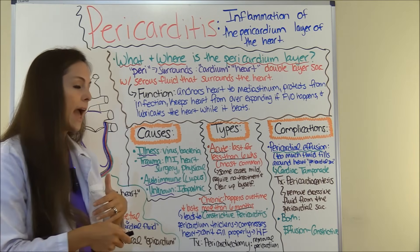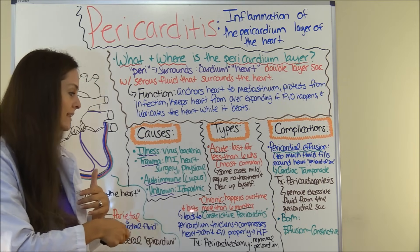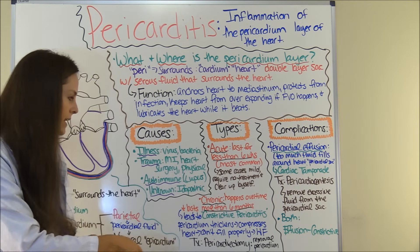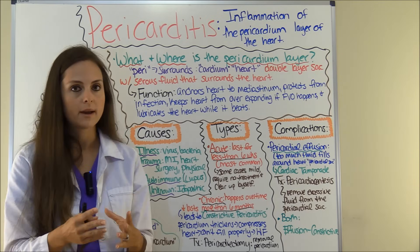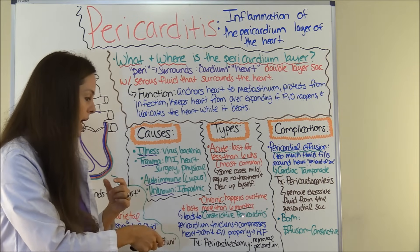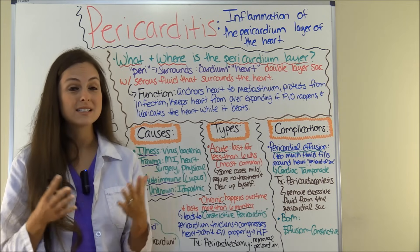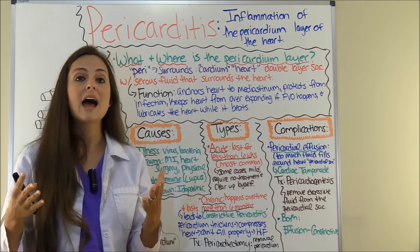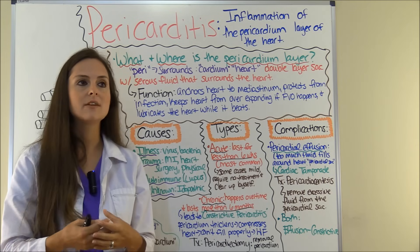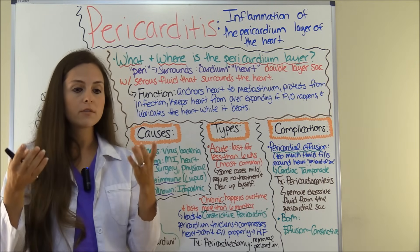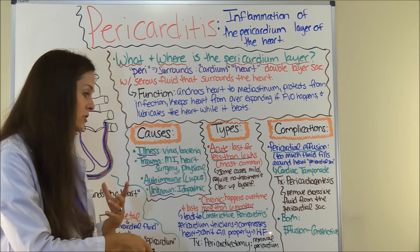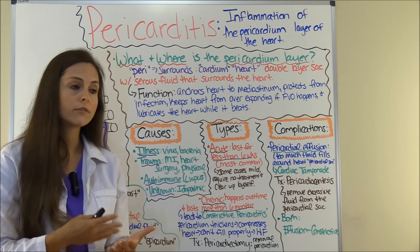Chronic pericarditis develops over time and lasts more than six months, so the patient is struggling with this chronically. Because of this constant inflammation on the pericardium, it can lead to what's called constrictive pericarditis. Just as the name says, it is constrictive to how the heart can pump, because the pericardium becomes thick and develops into scar-like tissue, which prevents the ventricles from properly filling and pumping out blood, and can lead to signs and symptoms of heart failure.